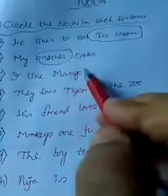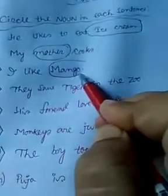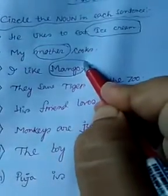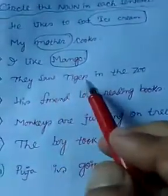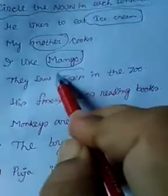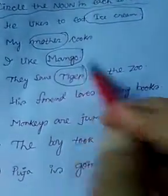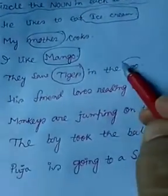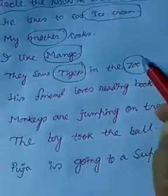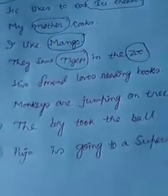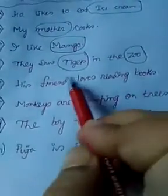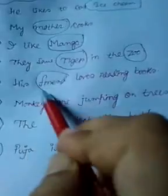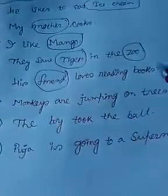C. I like mango. Mango is the noun. D. They saw a tiger in the zoo. Tiger and zoo are the nouns. E. His friend loves reading books. Friend and books are the nouns.